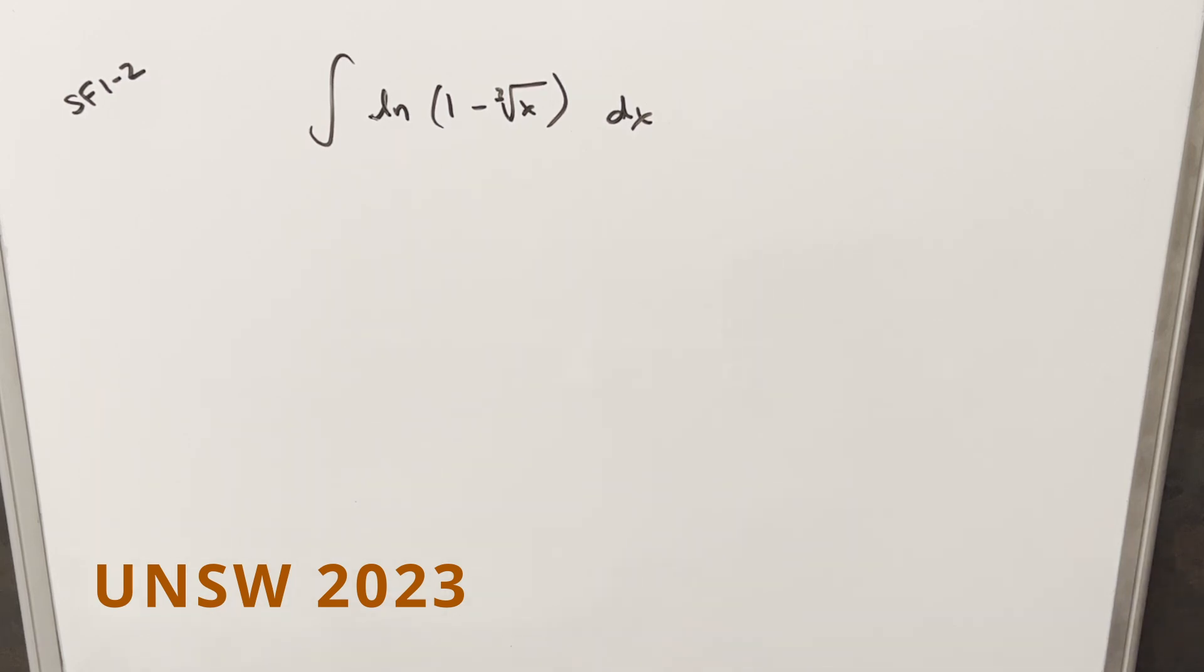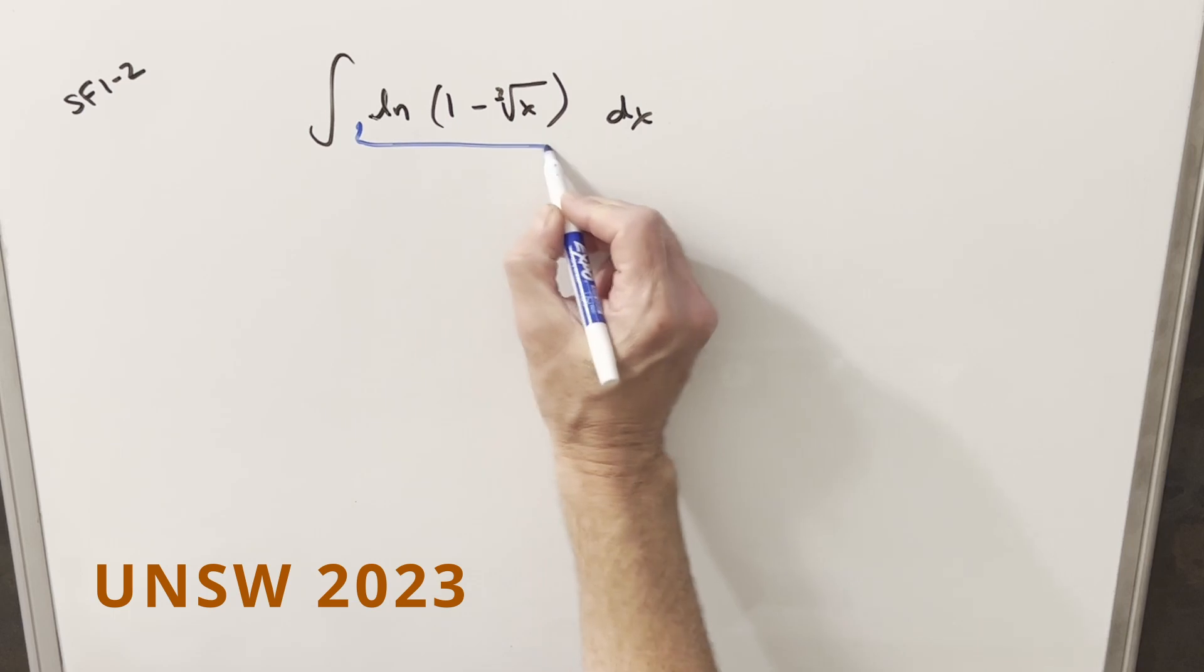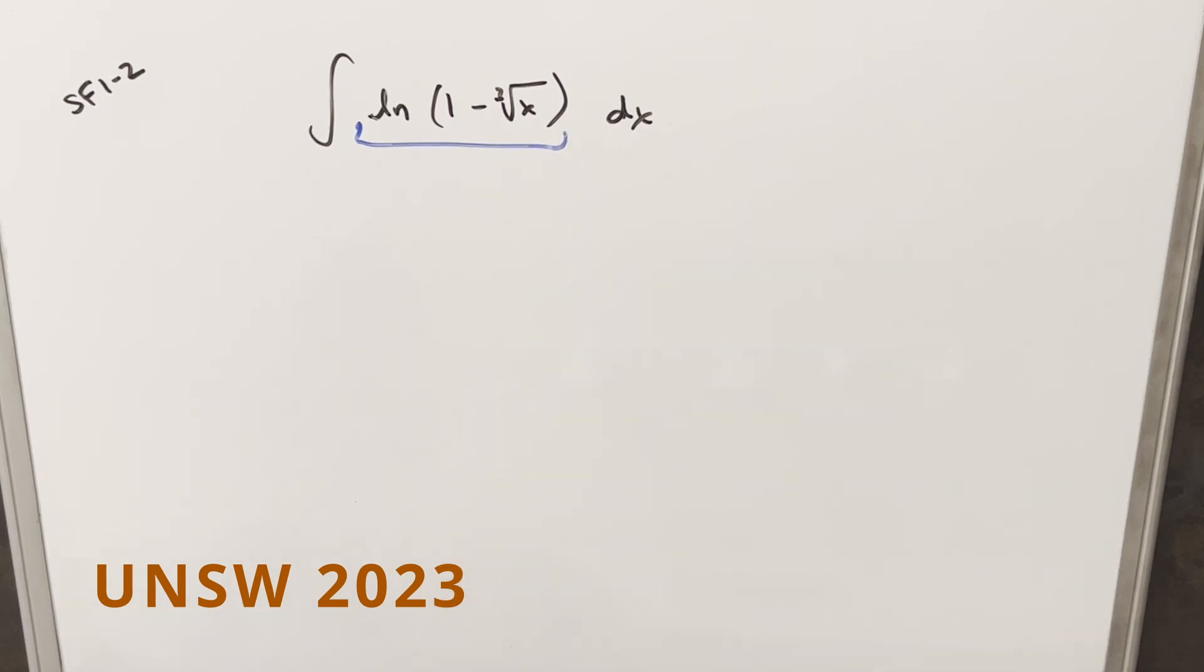The first thing I notice here is all we have is a natural log function by itself, which is making me think integration by parts. That's usually how we're going to handle natural log, like if we just had natural log x. But the only thing is what's inside here is a little more complicated. And so there's kind of a few ways to go about it, I think.